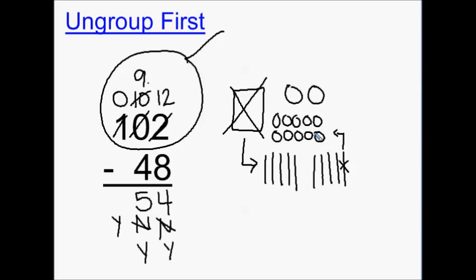I can now go ahead and cross off forty-eight. I will cross off four tens and eight ones.